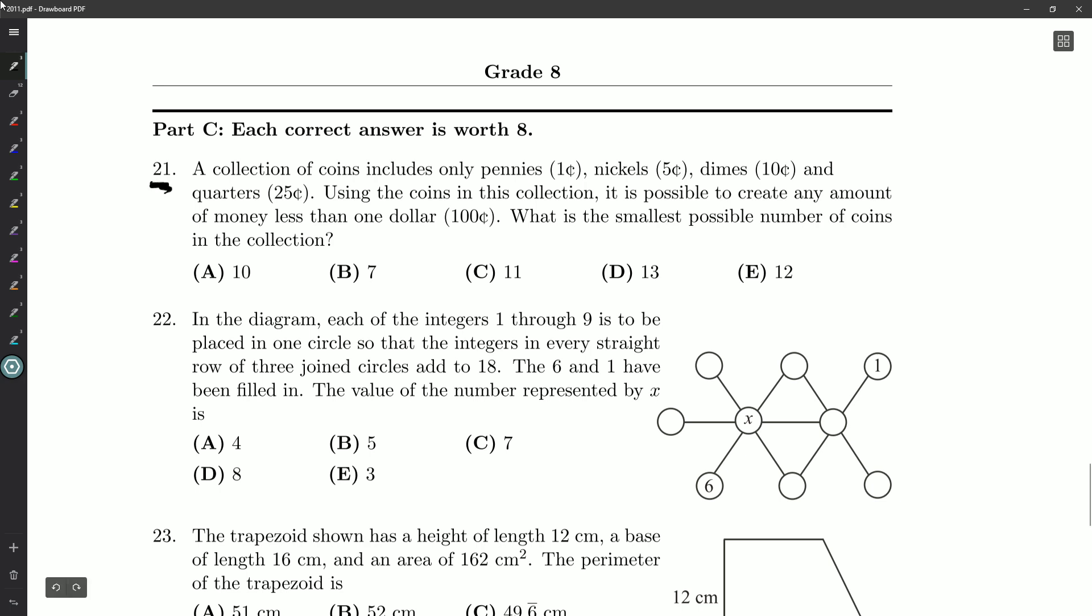A collection of coins includes only pennies worth one cent, nickels worth five cents, dimes worth ten cents, and quarters worth twenty-five cents. Using the coins in this collection, it is possible to create any amount of money less than one dollar. What is the smallest possible number of coins in the collection?